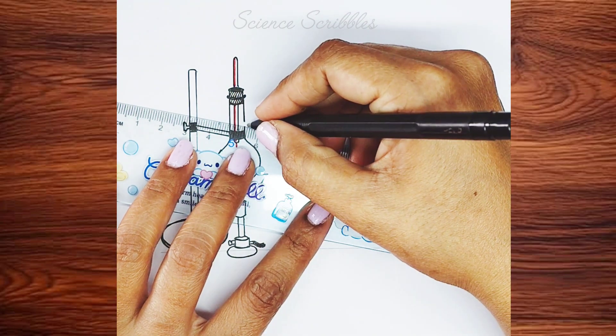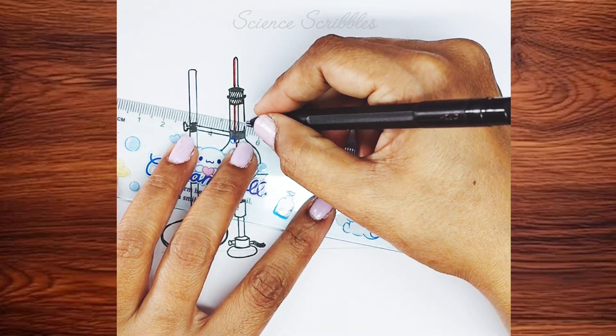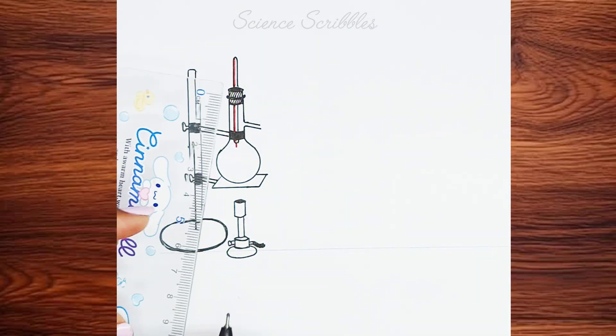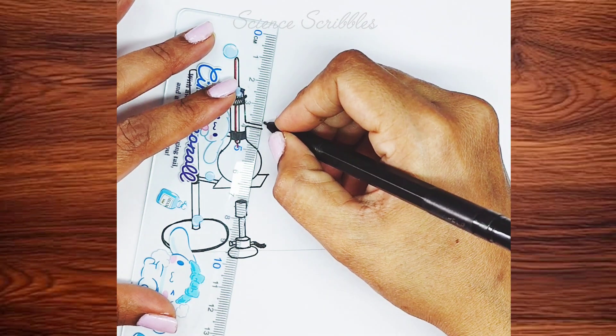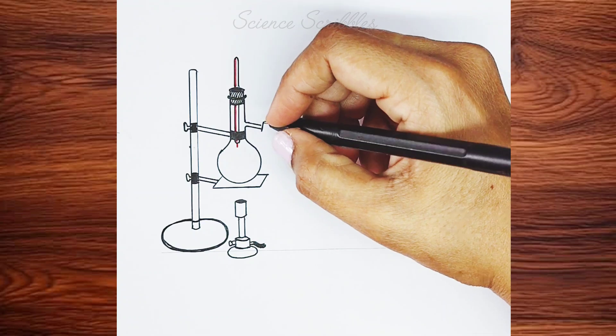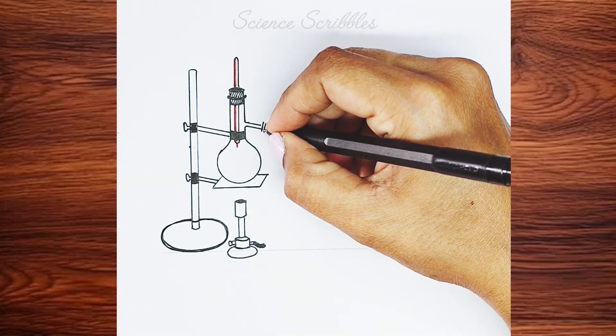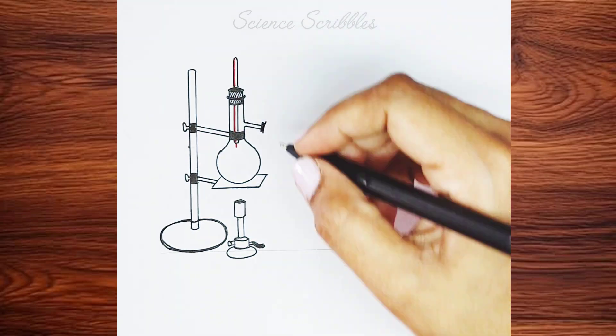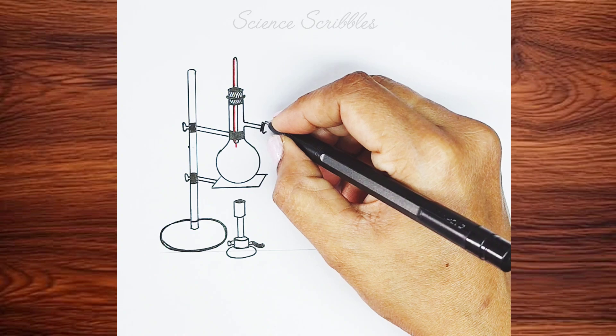Next, we'll connect the distillation flask to a small tube. Whenever you draw a tube, remember that it always has a stopper, so don't forget to include it. Now, draw a small tube-like structure, followed by a long slanting line.